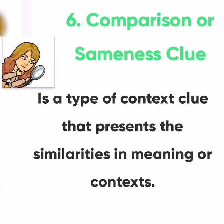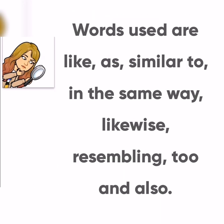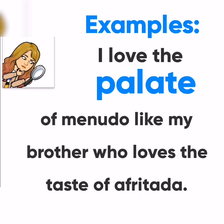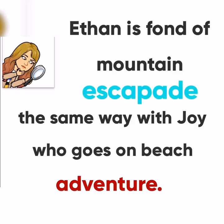The sixth type of context clue is the comparison or sameness clue. It presents similarities in meaning or context. Words used include 'like,' 'as,' 'similar to,' 'in the same way,' 'likewise,' 'resembling,' and 'also.' For example, 'I love the palate of menudo, like my brother who loves the taste of afritada.' The word 'palate' is the difficult term, while 'taste' is its comparing term. Another example: 'Ethan is fond of mountain escapade, the same way as Joy who goes on beach adventure.' The word 'escapade' is the difficult term, while 'adventure' is its comparing term.